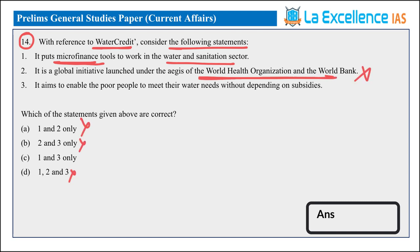By removing statement 2 and eliminating it, we can derive the answer. So 1 and 3 is the answer. Water Credit is an NGO's initiative to provide microfinance, enabling poor people to meet their water and sanitation demands. So 1 and 3 is the answer — Answer is C.